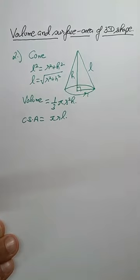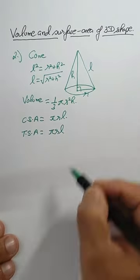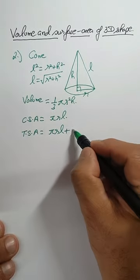So this is pi rl and the TSA, the total surface area, will be the curved surface area pi rl plus the base area which is a circle which is pi r square.